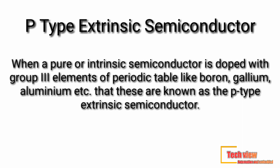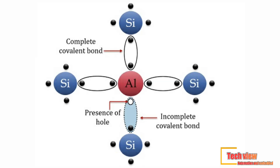When a pure or intrinsic semiconductor is doped with group 3 elements of the periodic table like boron, gallium, or aluminium, these are known as p-type extrinsic semiconductors. An aluminium atom contains three electrons at its valence shell, while silicon contains four electrons at its valence shell. The three valence electrons of the aluminium atom form covalent bonds with three electrons of silicon.